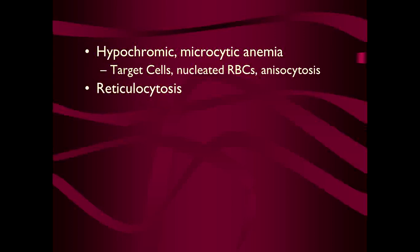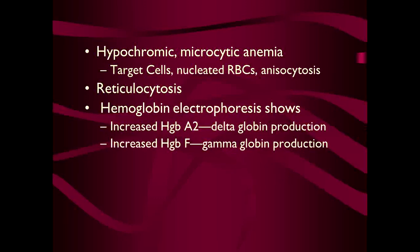On CBC there will be hypochromic microcytic anemia, and the peripheral film will show target cells, nucleated RBCs, anisocytosis, and reticulocytosis. Hemoglobin electrophoresis is an authoritative diagnostic tool; there will be increased hemoglobin A2, indicating delta-globin production, and increased hemoglobin F, indicating more gamma-globin production. On LFT there will be unconjugated hyperbilirubinemia, a feature of hemolysis.